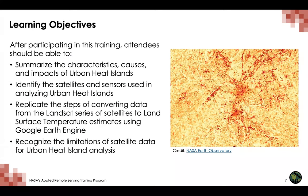The learning objectives for today's training are the following. After participating in this training, you should be able to summarize the characteristics, causes, and impacts of urban heat islands; identify the satellites and sensors used in analyzing urban heat islands; replicate the steps of converting data from the Landsat series of satellites to land surface temperature estimates using Google Earth Engine; and recognize the limitations of satellite data for urban heat island analysis.